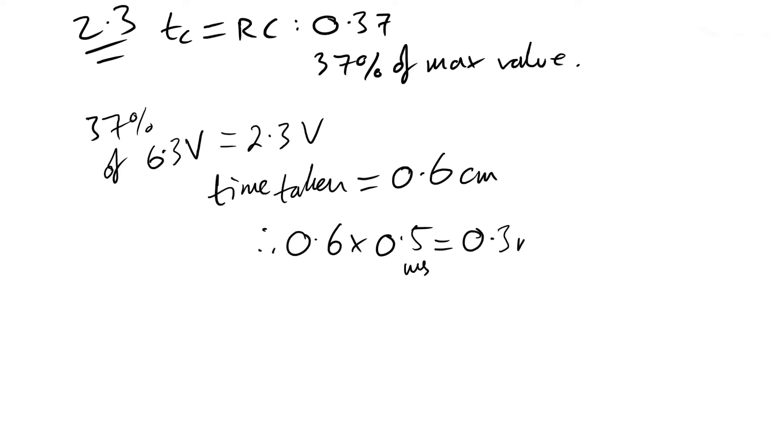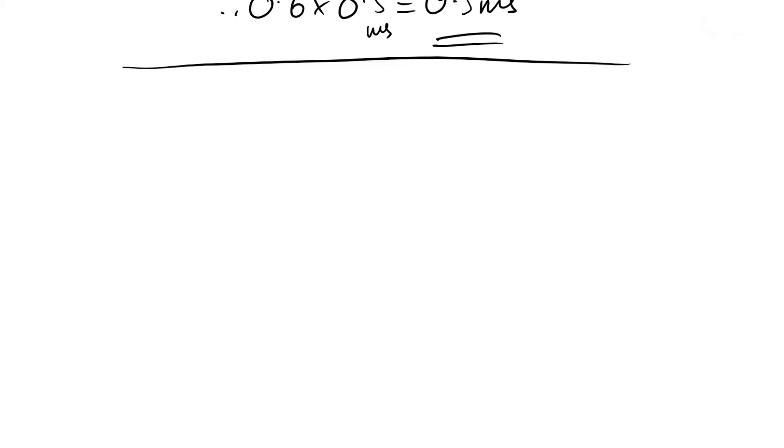And we get 0.3 milliseconds. That's our time constant. So some geezer now says that setting the time base to 0.2 milliseconds per division—division, that's the word I was looking for—would reduce uncertainty. Advantage or disadvantage?